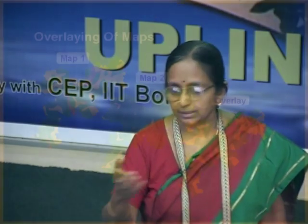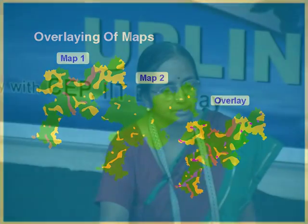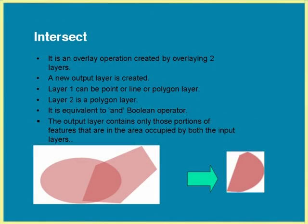This is an example of a union operation where you have one map and another map, and when you combine them you get an overlaid map. The corresponding table also gets created. Now, we saw Boolean OR which is union. Now comes Boolean AND, which is intersect.